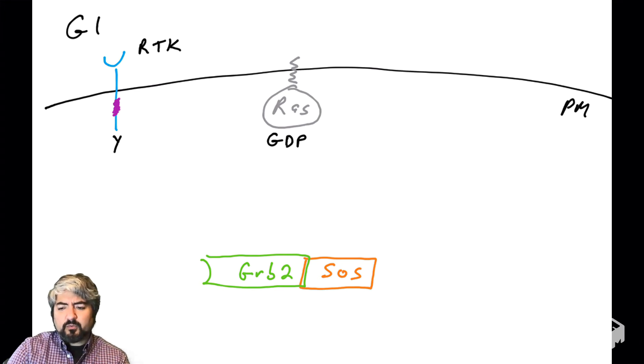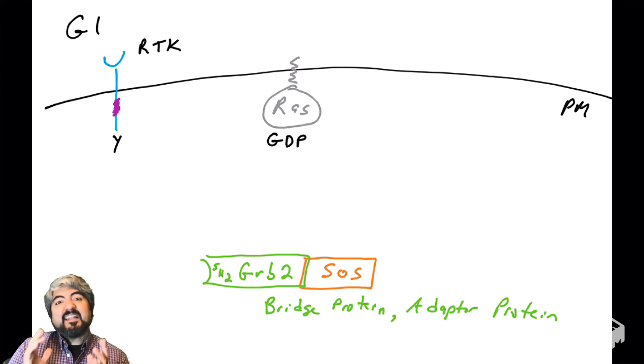We're going to see that SOS is bound to GRB2. So what's GRB2? We actually introduced GRB2 in an earlier video. GRB2 is a protein that has an SH2 domain on it. SH2 domains are domains of proteins that can bind phosphorylated tyrosines. They don't bind every phosphorylated tyrosine, but they can bind phosphorylated tyrosines that also have certain amino acids around them that fit into the binding pocket of this protein's SH2 domain. GRB2 is an SH2 domain containing protein, and it is bound with SOS.